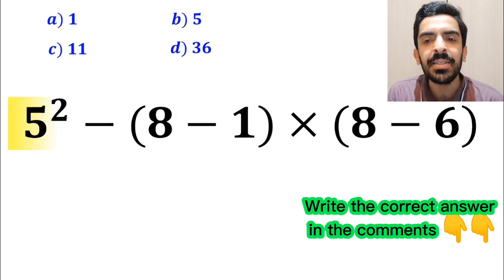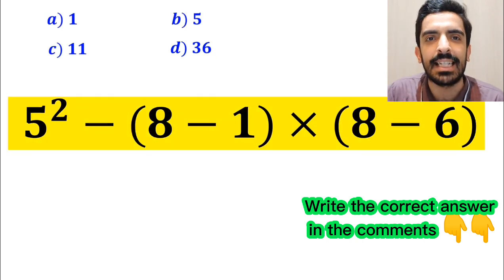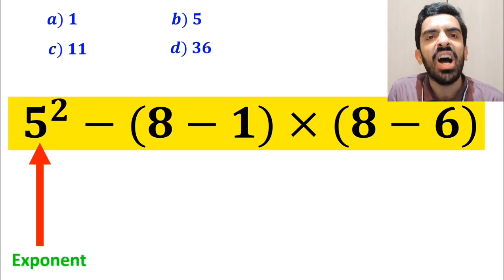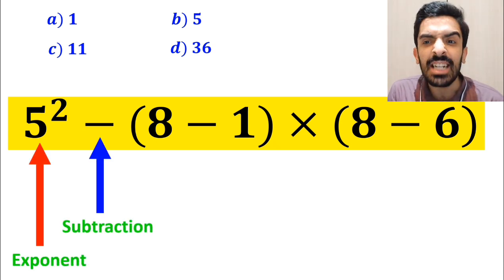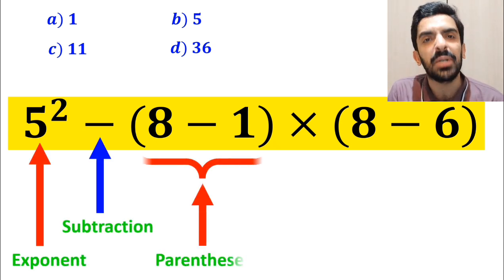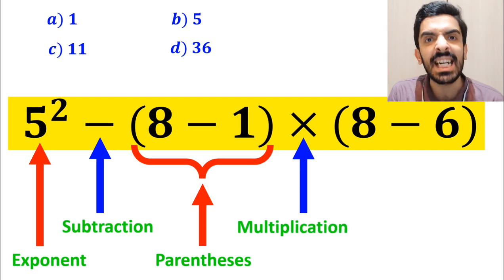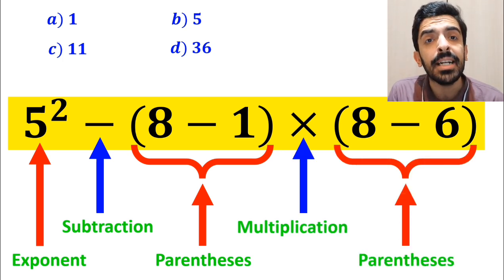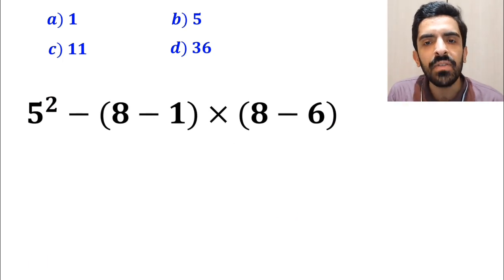Alright, now let's solve this question step by step correctly. As you can see in the image and this expression, first we have an exponent, then a subtraction sign, and after that parenthesis, followed by a multiplication sign, and finally another parenthesis.